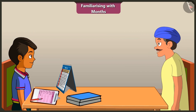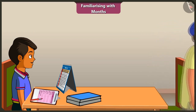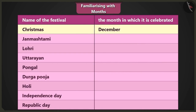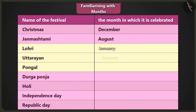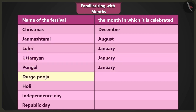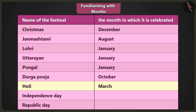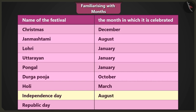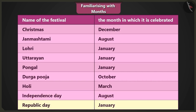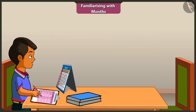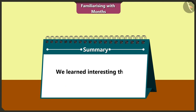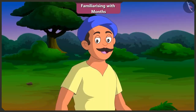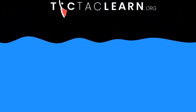This is very good. You do your homework. Christmas festival comes in December. Janmashtami comes in August. Lohri, Uttarayan and Pongal come in January. Durga Puja is celebrated in October. Holi in March. Independence Day in August. And Republic Day in January. Homework is done! Friends, today in this video we learned interesting things related to the months of the year. In the next video, we will familiarize ourselves with the seasons.